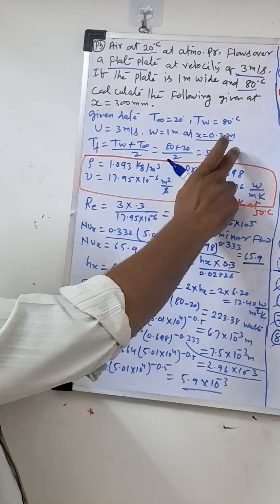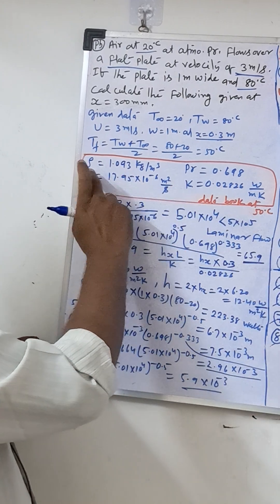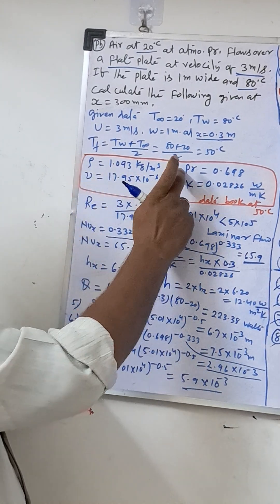First we will find the film temperature. With the film temperature we will see from the data book all the constant values: density, kinematic viscosity, Prandtl number, thermal conductivity we will find.